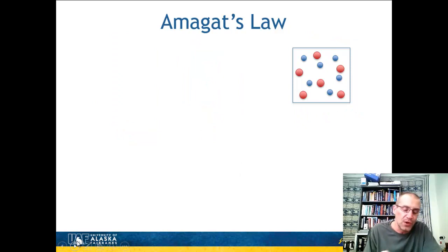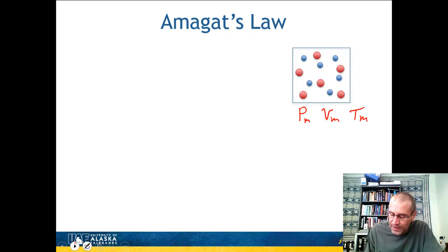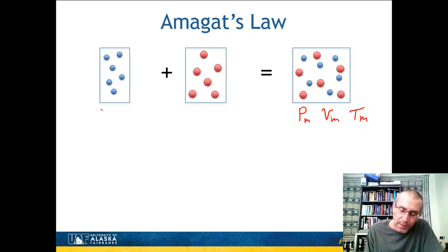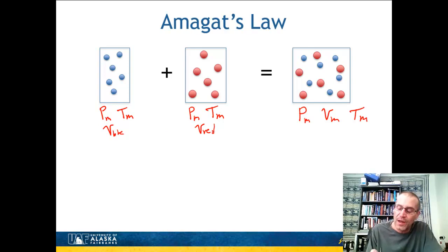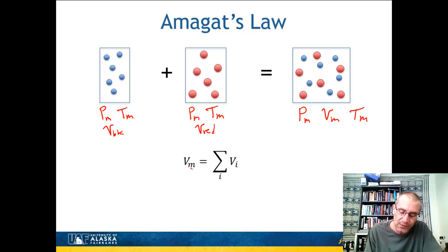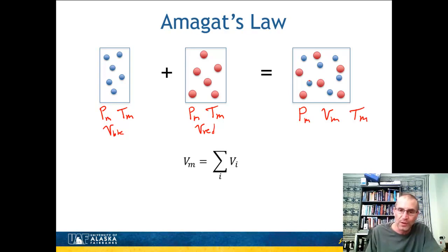Another approach is Amagat's Law. We're still at the pressure, volume, and temperature of the mixture. Instead of dividing into two bins based on pressure, we take all the blue molecules and put them into one bin, keeping pressure and temperature constant, and just make the volume smaller. Same thing with the red — pressure of the mixture and temperature of the mixture, but at smaller volumes: V_blue and V_red. We evaluate these pure component properties and then add them together. This is called additive volume, because the volume of the mixture is the summation of these two volumes. This is actually a better representation, because by reducing the volume and keeping pressure and temperature constant, we maintain about the same level of non-ideality in each separate box as in the mixture. So Amagat's Law tends to be a better rule to use when evaluating mixtures.